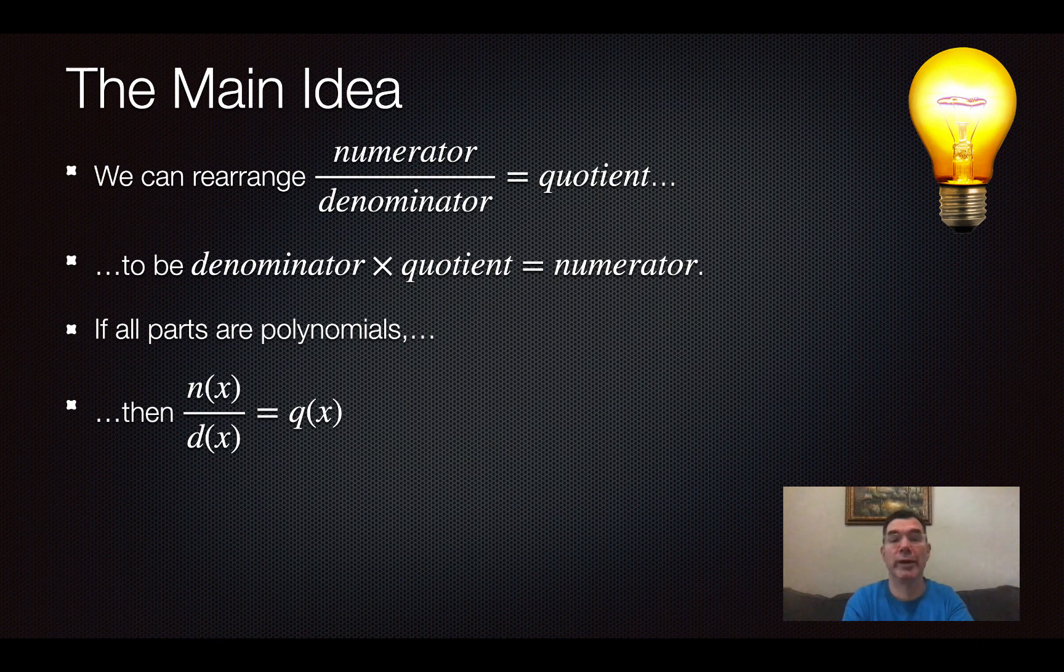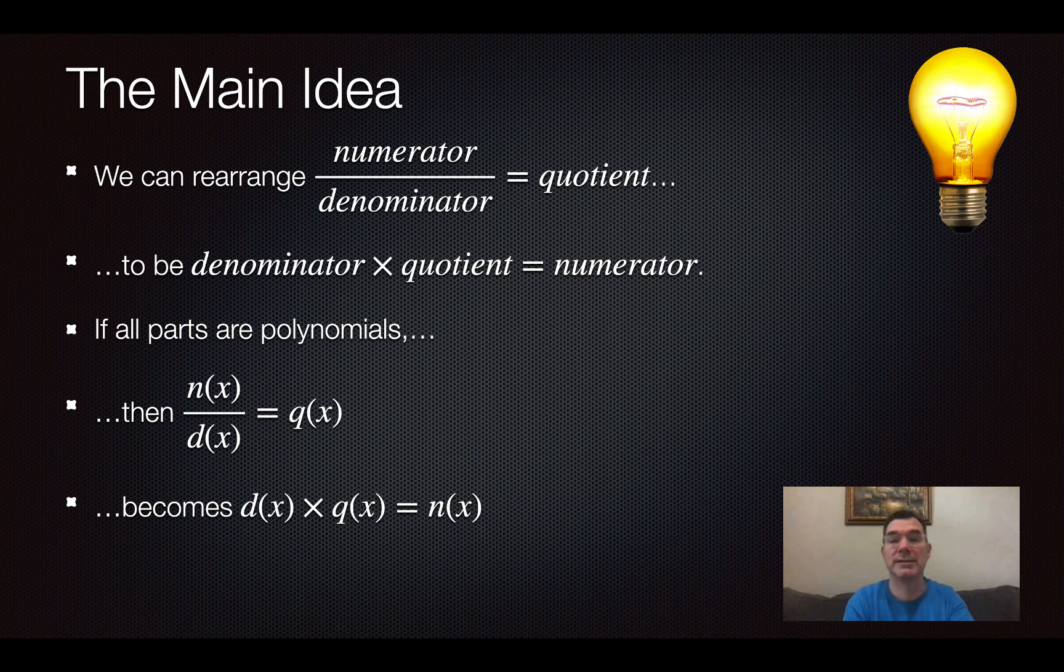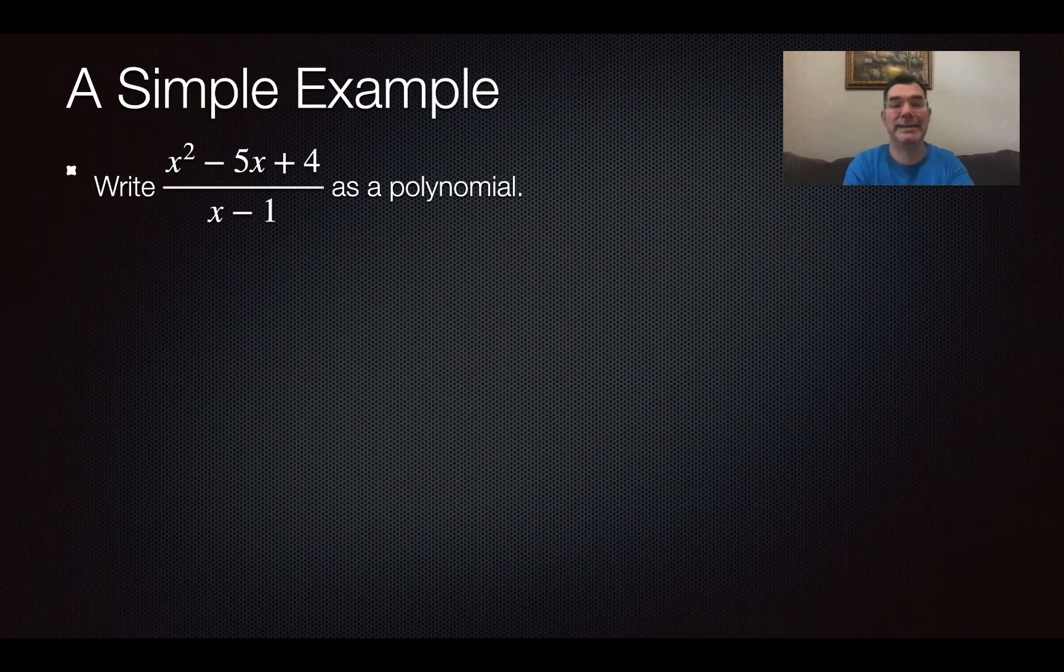I'm going to call the numerator n(x), the denominator d(x), and the quotient q(x), so that my numerator over denominator equals quotient becomes n(x) over d(x) equals q(x). And I can rearrange that as well as long as d(x) is not zero, and I can get d(x) times q(x) equals n(x), just like I rearranged the original division problem at the top. So that's kind of the idea.